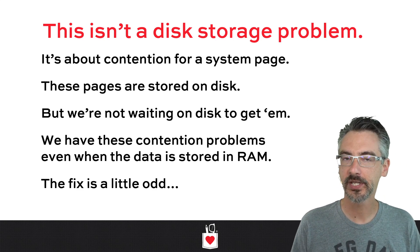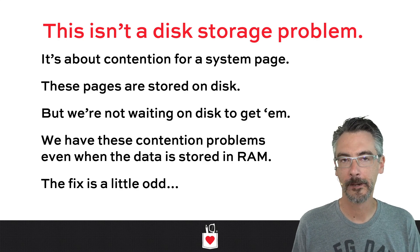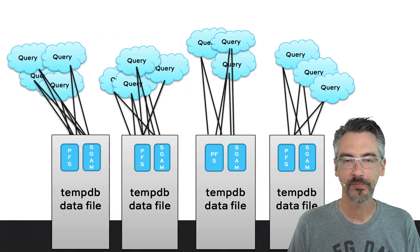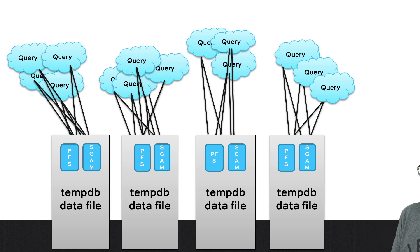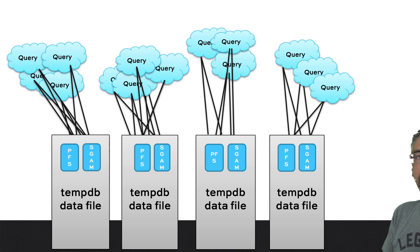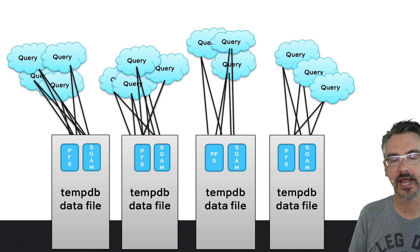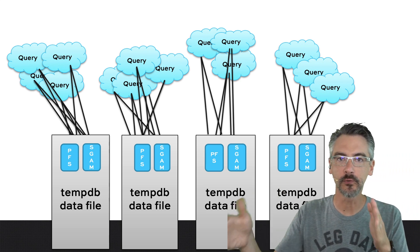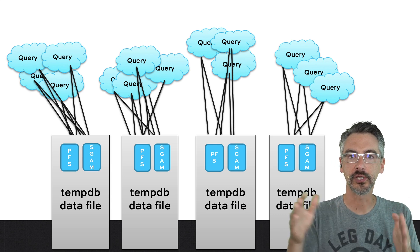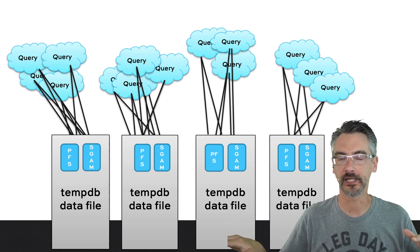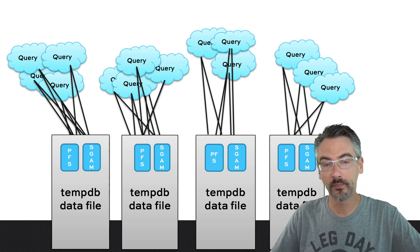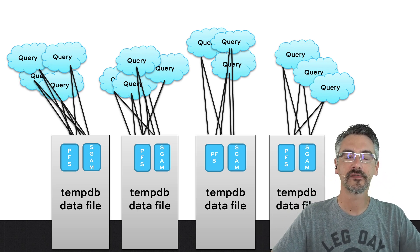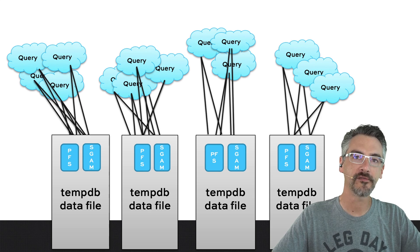The fix is going to seem really weird. In order to solve it, we have to add more TempDB data files. If we add more TempDB data files, we're going to have more of these PFS and SGAM pages, and SQL Server will use them roughly evenly. So fixing this problem - avoiding this problem with TempDB - is just a matter of adding several small files.